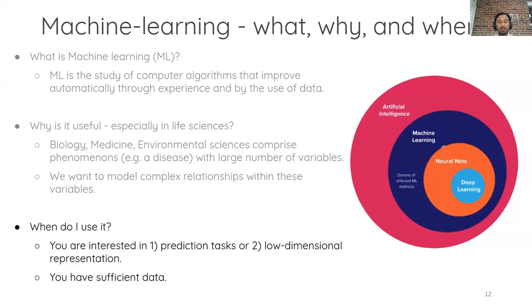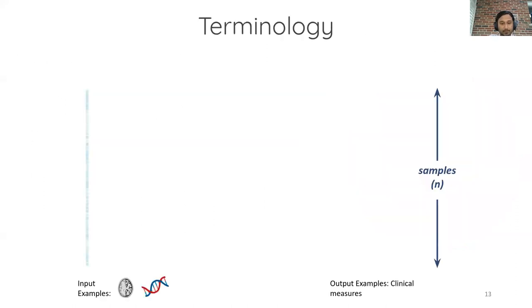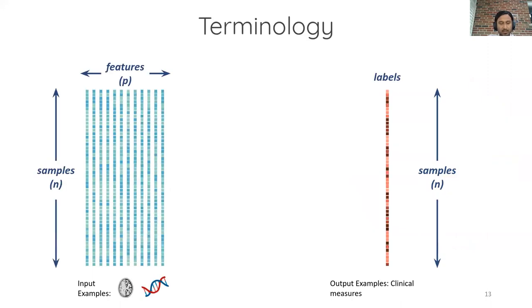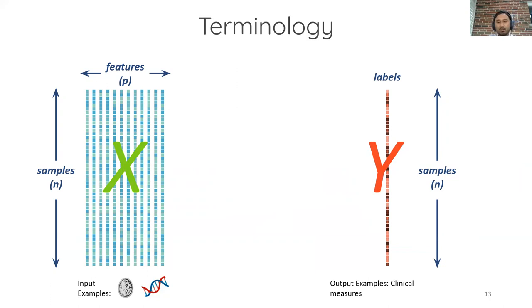Machine learning only works if you have a well-defined prediction task, or if you're interested in low-dimensional representation. The prediction task usually falls into the supervised learning category, whereas low-dimensional representation falls into the unsupervised learning category. Of course, all of this only works if you have a lot of data. The input is usually arranged as samples by features in tabular format — samples can be individuals, and features can be brain volumes or genetic information. The outcome can be binary, like healthy or disease, or a continuous variable like symptom severity.